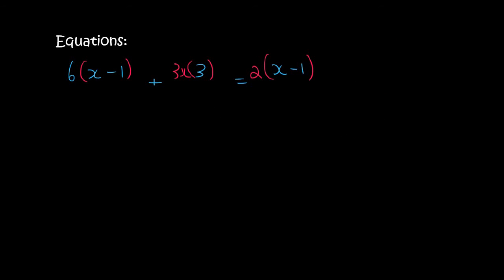And then at this point, it's just a normal question. So let me quickly solve it for you guys. 6x minus 6 plus 9x equals 2. Then you multiply it in. So 2x minus 2. I'm then going to take all x's to the left, all numbers to the right. You can do it the other way around if you want.